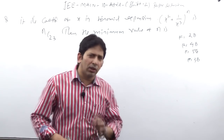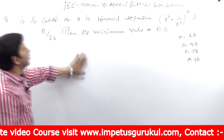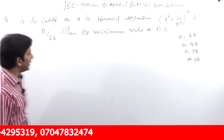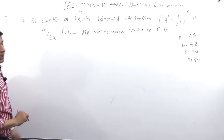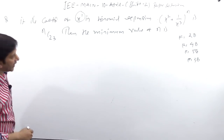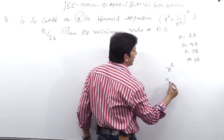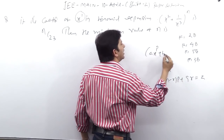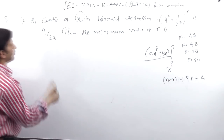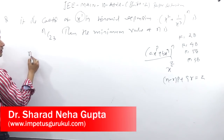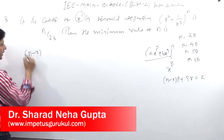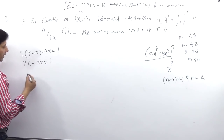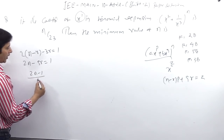Next question — a binomial theorem question. If the coefficient of X in the binomial expansion (x² + 1/x³)^N is NC₂₃, find the value of N. Using the direct formula for the power of X in a general term: (N - R)·2 - 3R = 1, giving 2N - 5R = 1, so R = (2N - 1)/5.